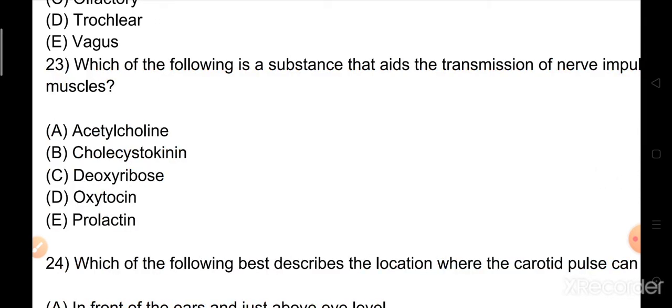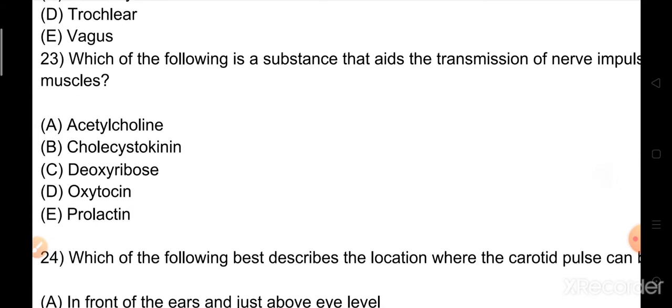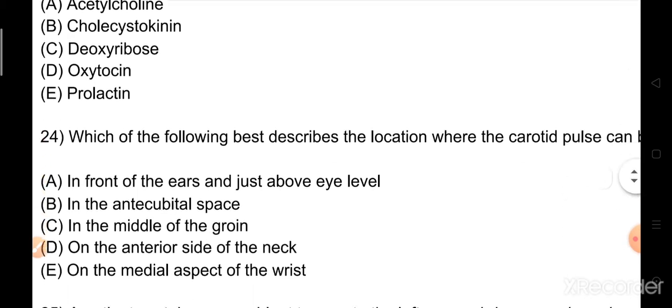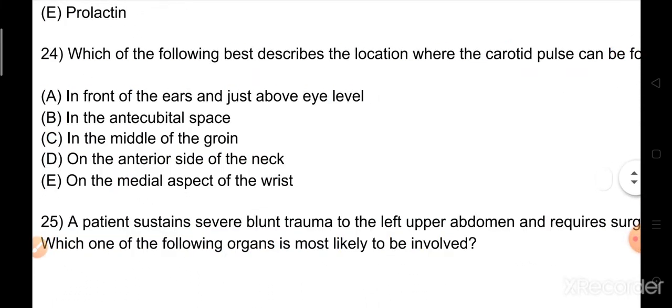Question number 23: Which of the following is a substance that aids the transmission of nerve impulse to the muscles? Options: A) acetylcholine, B) cholecystokinin, C) deoxyribose, D) oxytocin, E) prolactin. The right answer is option A, acetylcholine.